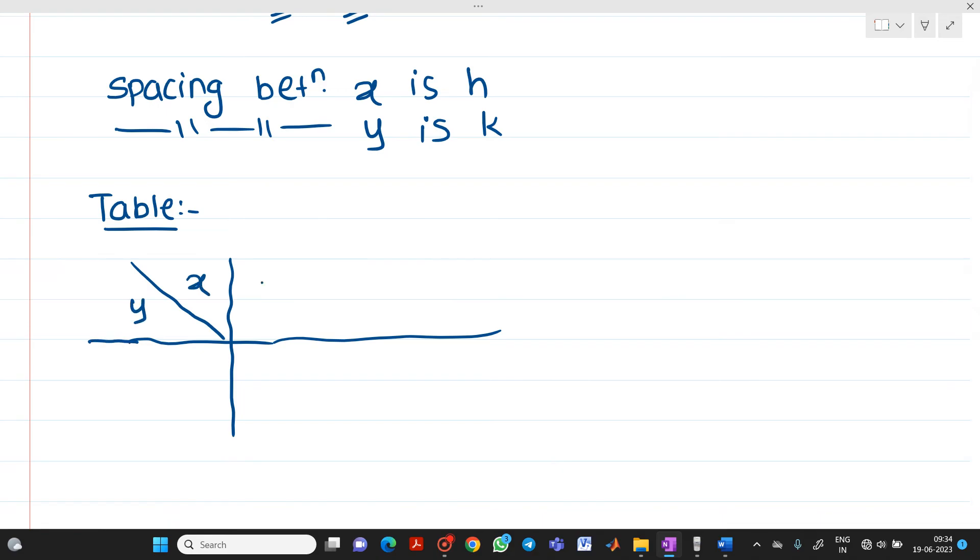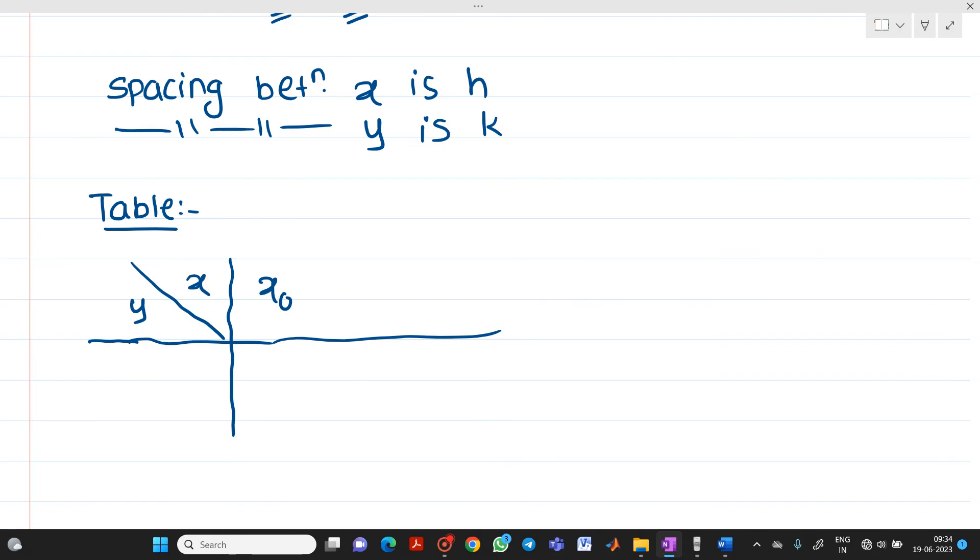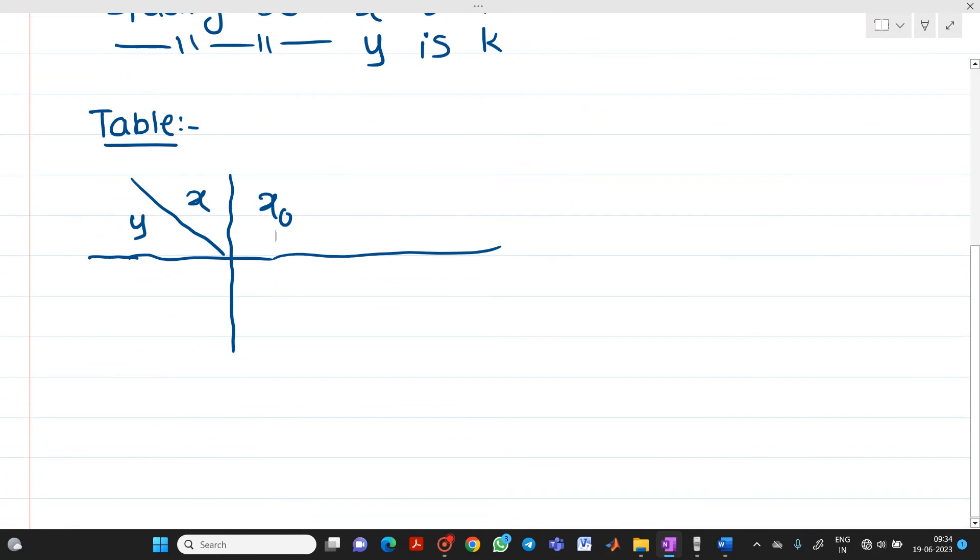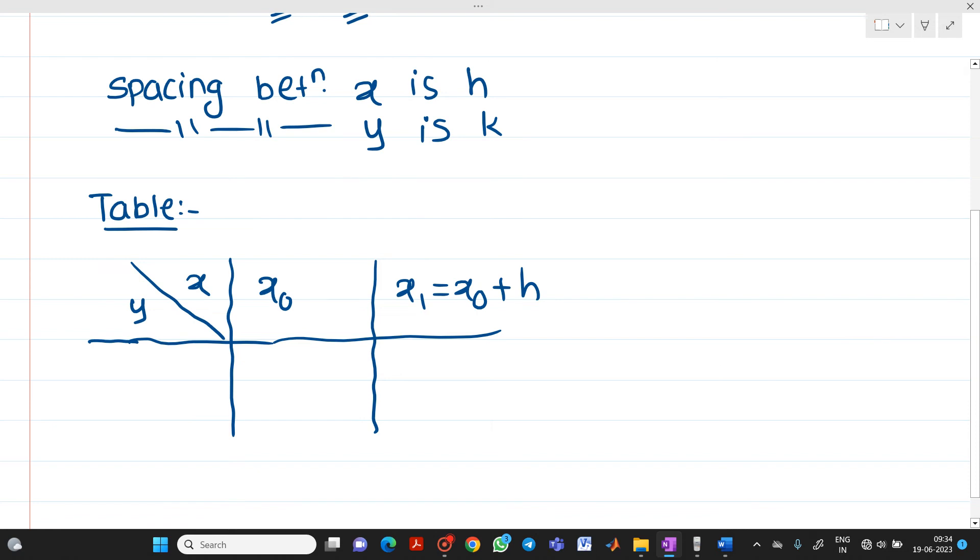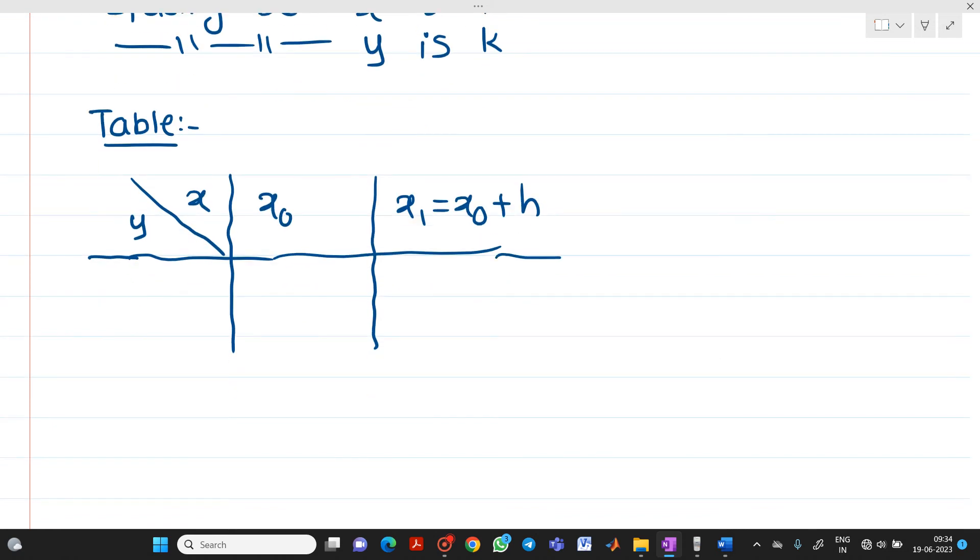So first element will be x0 as it is started from x0 limit. Next element will be x1 which is equal to x0 plus h. Now you will ask me why we are taking h because spacing between x is denoted by h. And let us say the last value here will be x2 equal to x1 plus h.